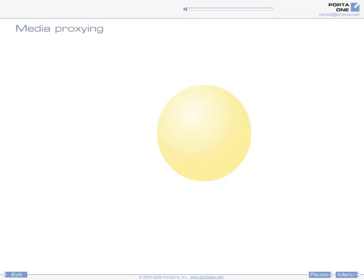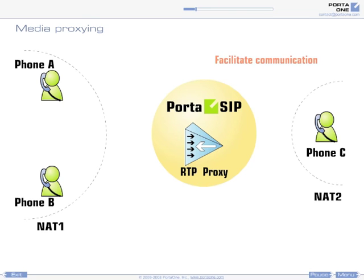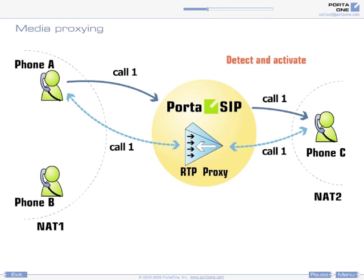Media Proxying. Portisip includes a media proxy server that can be used to proxy a media stream — voice or video — via the Portisip server. This is done primarily to facilitate connections between your customers' IP phones, since the majority of them will be on a private network behind some sort of NAT router. Portisip can dynamically detect whether the IP phones participating in a conversation are behind NAT and then activate the media proxy.